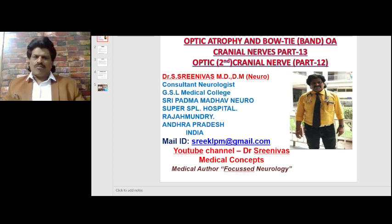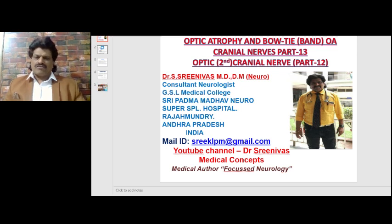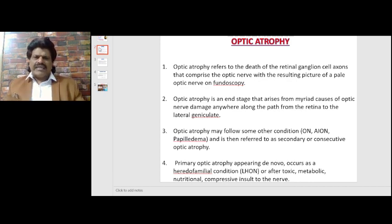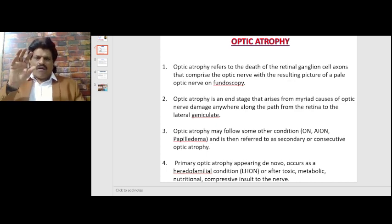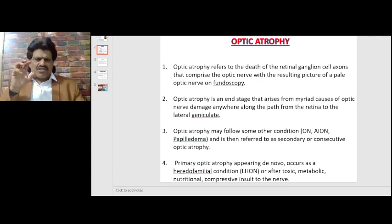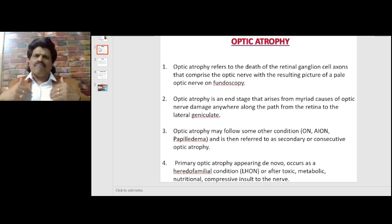Today we're going to talk about a very interesting topic: optic atrophy and bow tie or band optic atrophy. Optic atrophy refers to the death of the retinal ganglion cell axons that comprise the optic nerve, with the resulting picture of a pale optic nerve on fundoscopy.